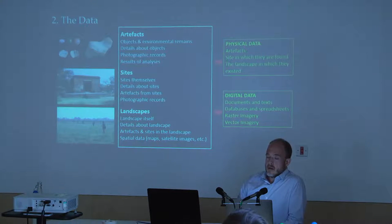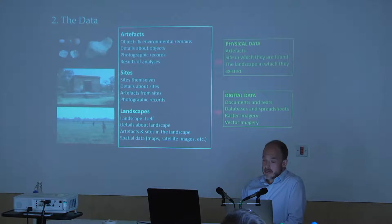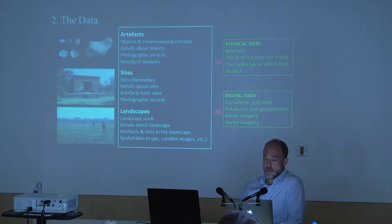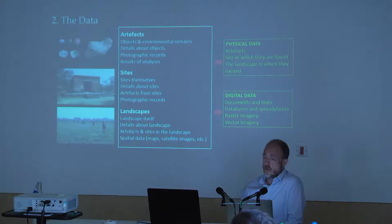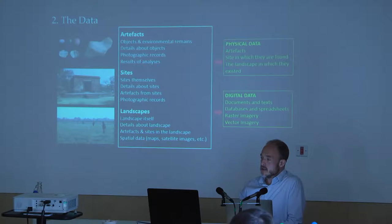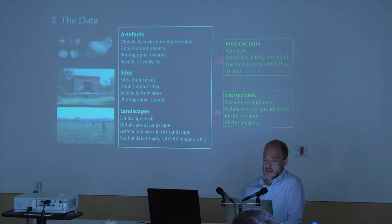Thinking about data management, we can reduce all of that down to different categories. We have the physical objects, the material, the sites in which that material is found, and the landscape in which it's all contained. Then there's the digital data that comes from or is associated with that, which itself can be categorized into documents and texts, databases and spreadsheets, raster imagery, and vector imagery.